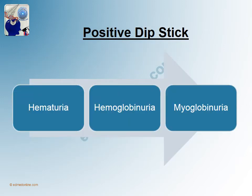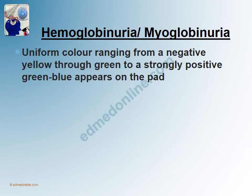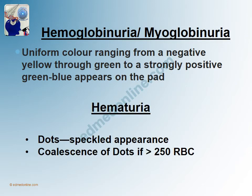A positive dipstick test could be because of hematuria, hemoglobinuria, or myoglobinuria. Hemoglobinuria and myoglobinuria will cause a uniform color change — that is, the change on the pad will be uniform in its complete entirety, ranging from yellow through green to a strongly green-blue color, which is a strongly positive test. For hematuria, the positive test will most often appear in the form of dots, giving a speckled appearance rather than a uniform one. If more than 250 RBCs are present, there may be coalescence of dots giving a more uniform color.